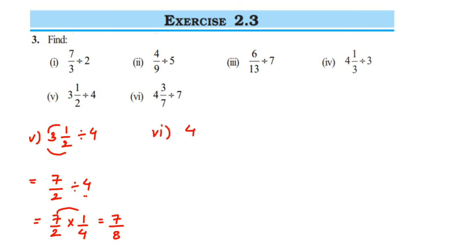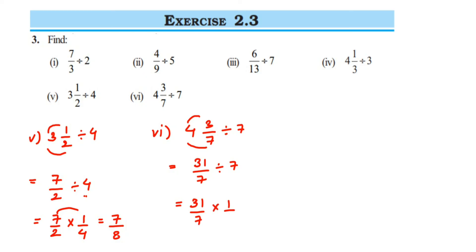Sixth question: 4 and 3/7 divided by 7. Convert to improper fraction: 7 × 4 = 28, plus 3 = 31, so 31/7 divided by 7. The first number 31/7 remains the same, division becomes multiplication, and the reciprocal of 7 is 1/7. Multiply: 31 × 1 = 31 and 7 × 7 = 49. This is a proper fraction, so the answer is 31/49.